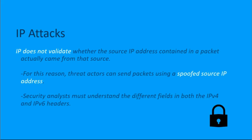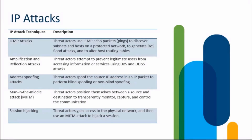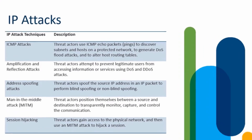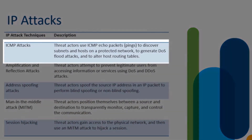Security analysts must understand the different fields that exist in both IPv4 and IPv6 headers. Diving deeper into IPv4 and IPv6 attacks, first let's hit ICMP attacks. Threat actors use ICMP messages — the echo packets for pings — to discover subnets and hosts on networks. They can also use ICMP attacks to generate denial of service floods.